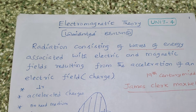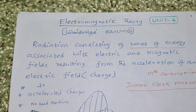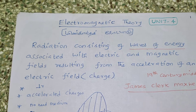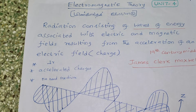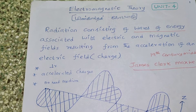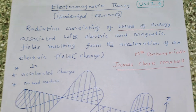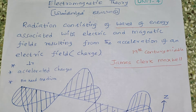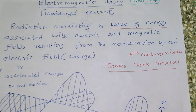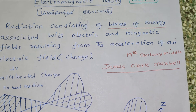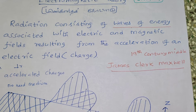Electromagnetic fields are perpendicular. They are produced by accelerated charges. There is no need for any medium for propagation. In the 19th century, James Clark Maxwell was the one who told us this.